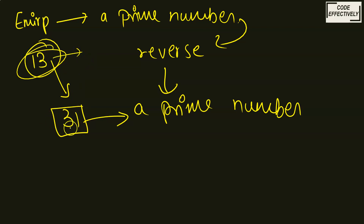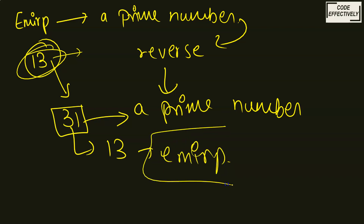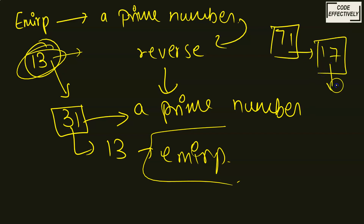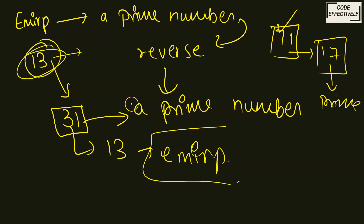Vice versa, if 31 is a prime number and we get the reverse of 31, that is 13, and 13 is also a prime number, so we can say 31 is an EMERP number. Another example is 71. We know 71 is a prime number, and if we reverse 71, it comes out to be 17. Since 17 is also a prime number, we can say 71 is an EMERP number. In short, a prime number whose reverse is also a prime number is known as an EMERP number. This is our main methodology.